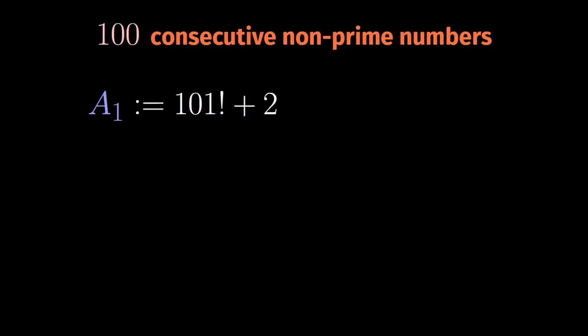We set a1 to be 101 factorial plus 2. Then we define a2 as 101 factorial plus 3. And we go on with a3, a4, and at every step we add 1. Then we have consecutive numbers, of course.